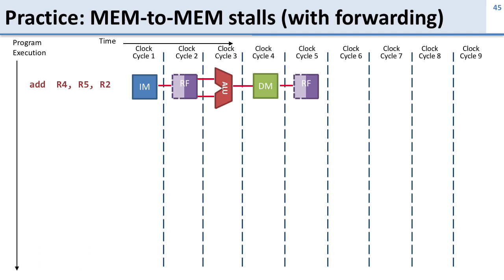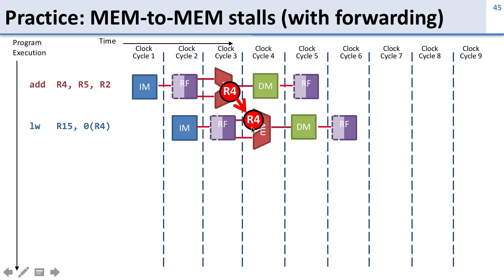Now what do we have to do if we want to do this with forwarding? With forwarding, we can go ahead and take this instruction, take the results right after the end of the cycle from the ALU, and forward them directly to the ALU in the next instruction. So we can use it to go ahead and calculate the address right away.